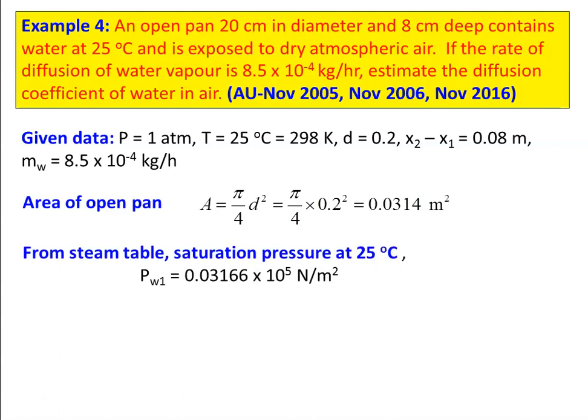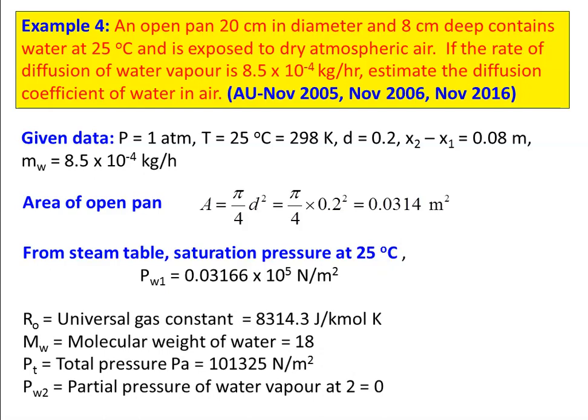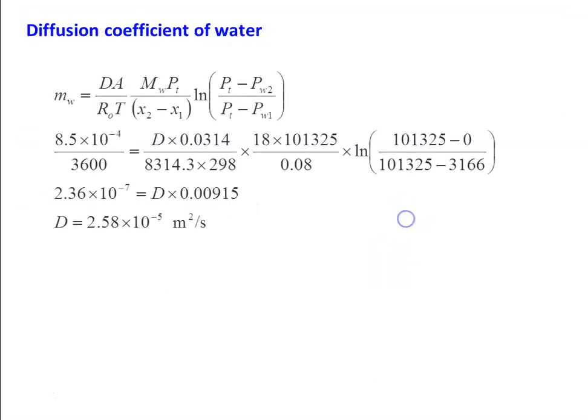From the steam table at 25 degree Celsius, PW1, partial pressure, is 0.03166 bar, which is 0.03166 into 10 power 5 Newtons per meter square. The universal gas constant is 8314.3 joules per kilogram per Kelvin. Molecular weight of water is 18. Total pressure is 1 bar, which is 101325 Newtons per meter square. Partial pressure of water vapor at location 2 equals 0. To calculate the diffusion coefficient of water, we use the same equation. The left hand side MW is given as 8.5 into 10 power minus 4 kilogram per hour, divided by 3600. D is the unknown.